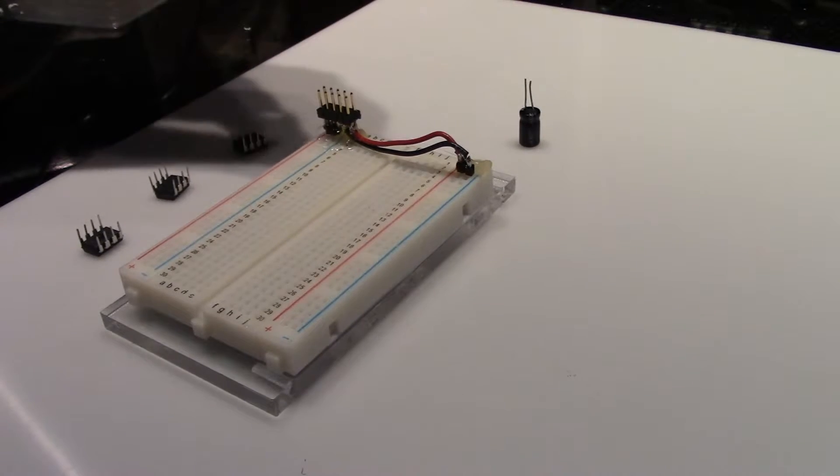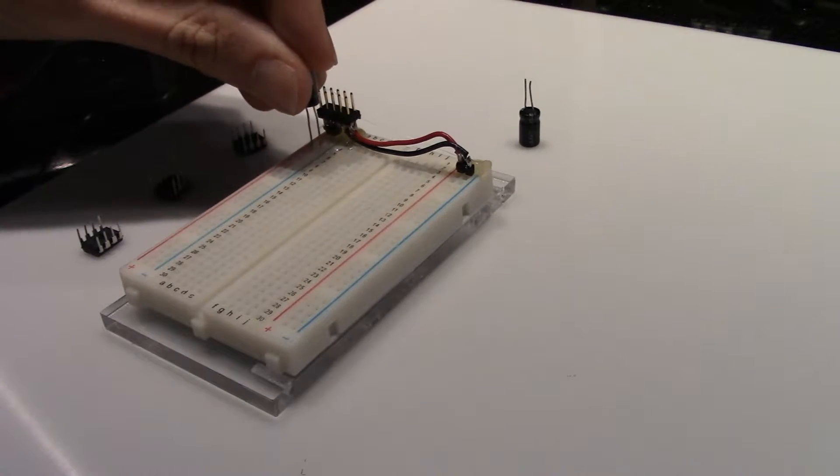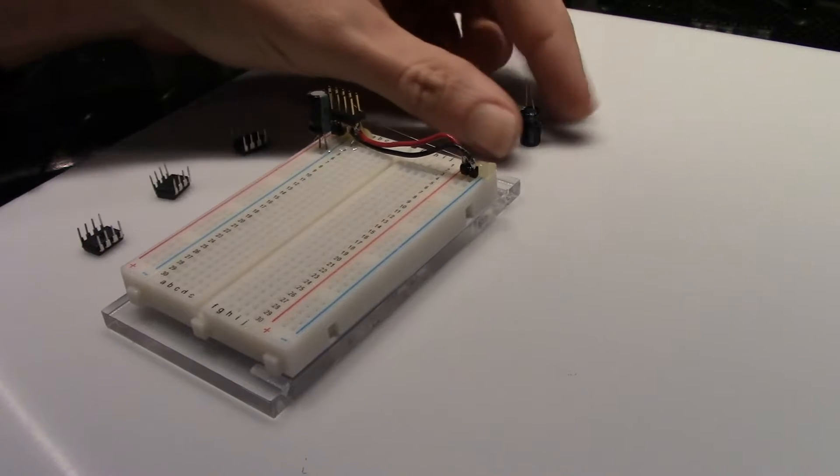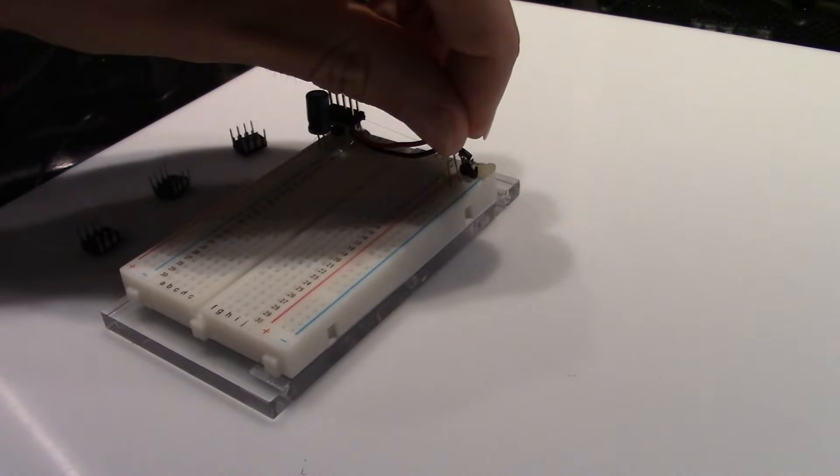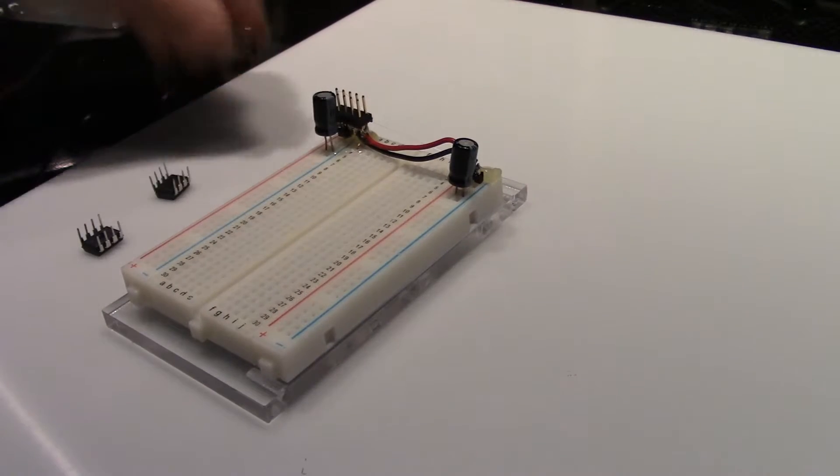Step 2. Place 10 microfarad capacitors near the top of the board, noting the polarity. The negative rail is on the left side of the board and the positive on the right. Ground is available on both sides.